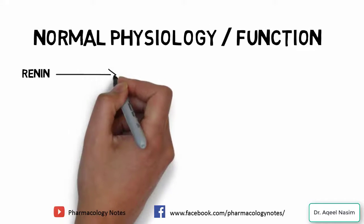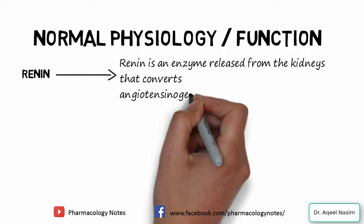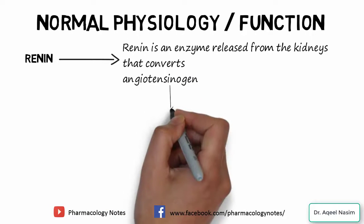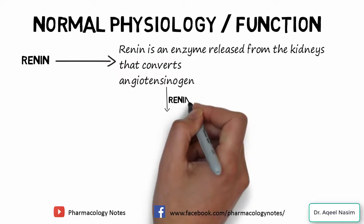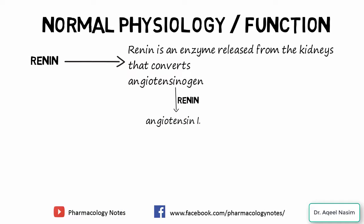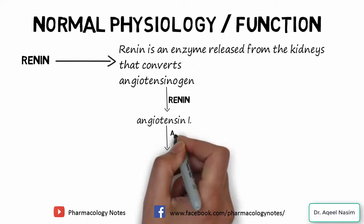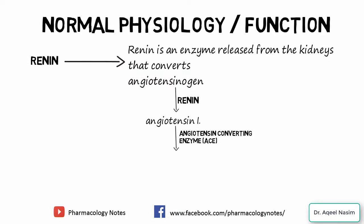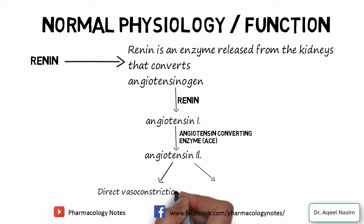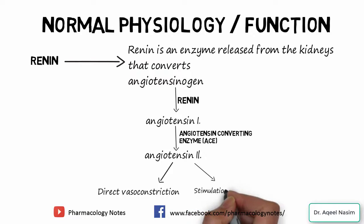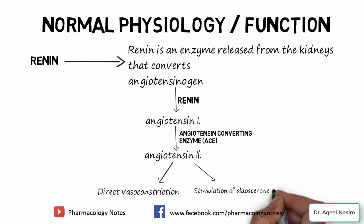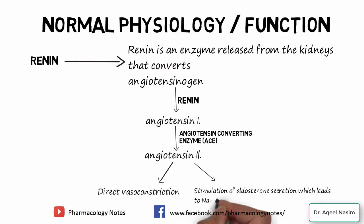Now let's discuss normal physiology so you understand how the RAS pathway works. Normally, the renin enzyme released from the kidneys converts angiotensinogen — a precursor — into angiotensin 1. In the presence of angiotensin-converting enzyme, angiotensin 1 is converted into angiotensin 2. Angiotensin 2 has two functions: it causes direct vasoconstriction, and it stimulates aldosterone secretion, which leads to sodium and water reabsorption.